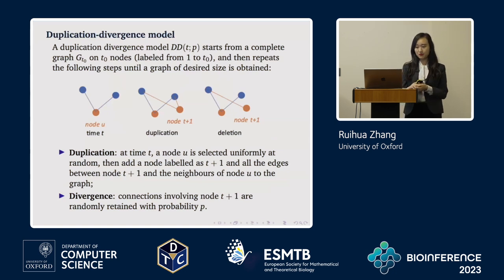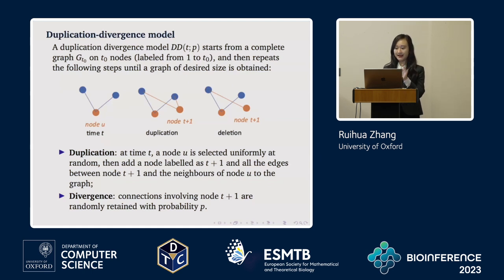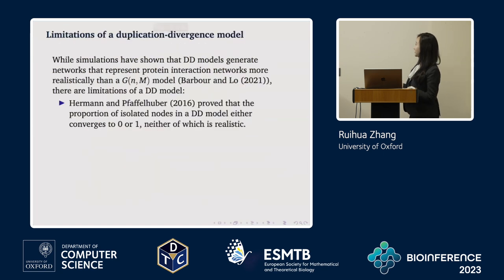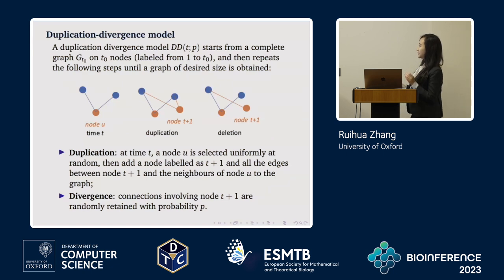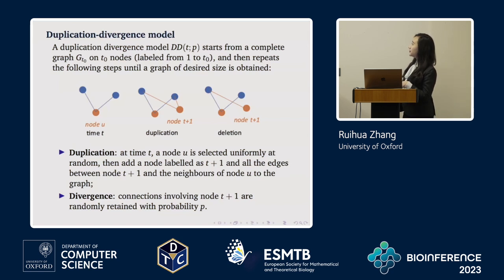A duplication divergence model starts from a complete graph with T0 nodes, labeled according to the time they are added. Steps are repeated until a graph of desired size is obtained. The first step, duplication, randomly selects a node U and duplicates it, copying all its edges. The second step, divergence or deletion, removes edges connected to the newly added node T+1 according to a probability P.